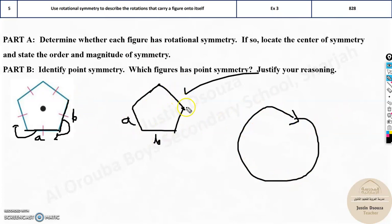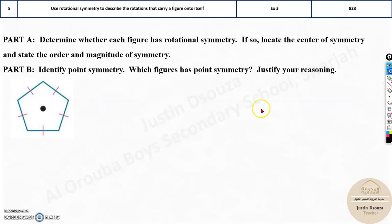How do we understand how many degrees we have to turn this? It's very simple. First you need to see the order. How many times can you rotate this to get the same image? In this case it's the number of sides because each time I change the side, I'm going to get it. That's one, two, three, four, five. Five, the order is five. The order would be five over here. The rotational symmetry exists. Yes, order is five.